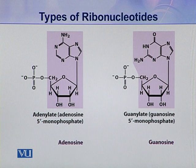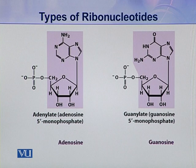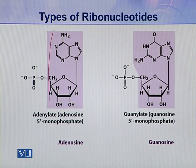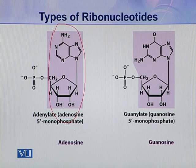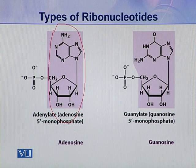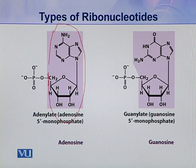As you can see, this coloured portion is a nucleoside. This is a nucleoside because a pentose sugar and a nitrogenous base, when they both combine, they make a nucleoside. Here the nitrogenous base is adenine, so this nucleoside is adenosine.